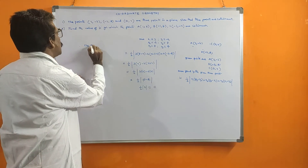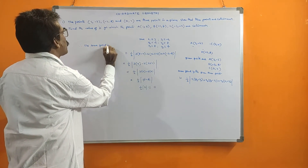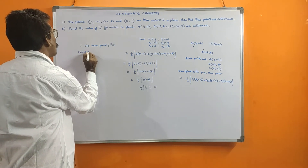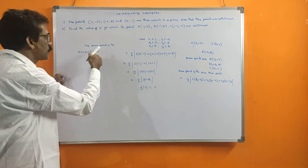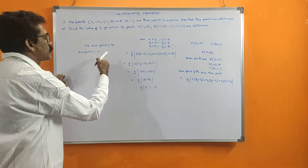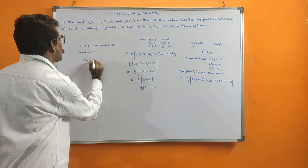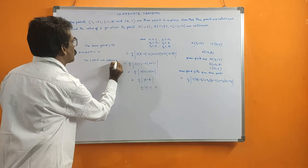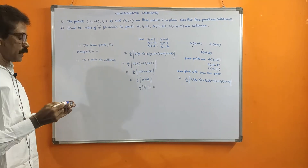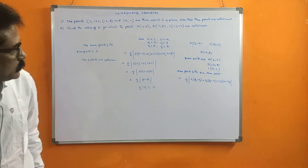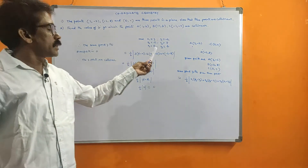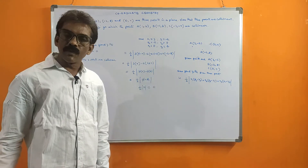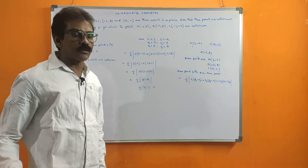So the area formed by the given points is 0. Therefore, the area formed by the given three points is 0. Therefore, the three points are collinear. We can show collinear like this — find the area formed by the given points; if area is 0, collinear; if not 0, not collinear.